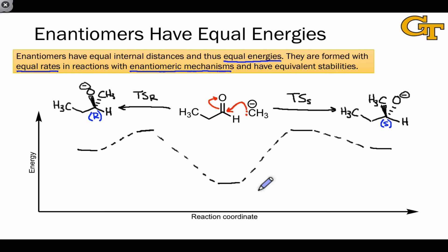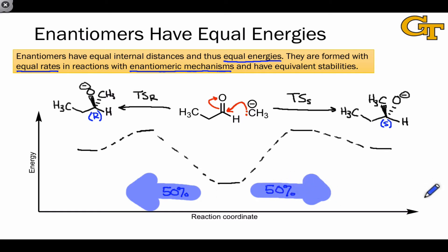This means that we should expect 50% of the reactant molecules to engage in the S pathway, and 50% of the reactant molecules to engage in the R pathway. Because there's no energetic preference for one way or another, the odds of a particular pair of reactant molecules going in one direction or the other are 50-50. The resulting equal mixture of enantiomers is known as a racemic mixture, or racemate.